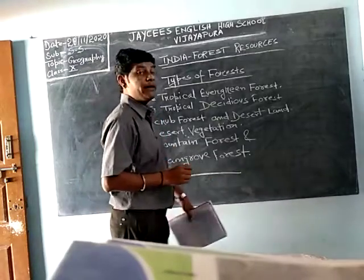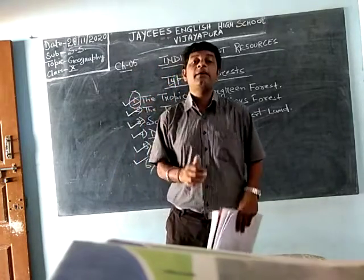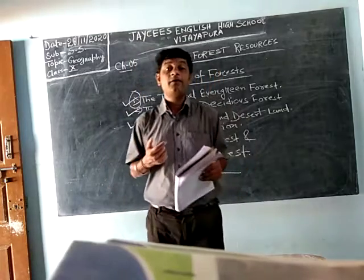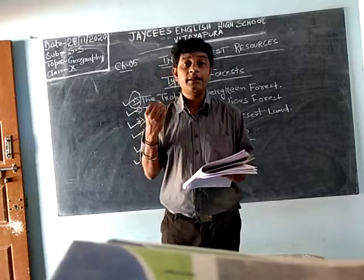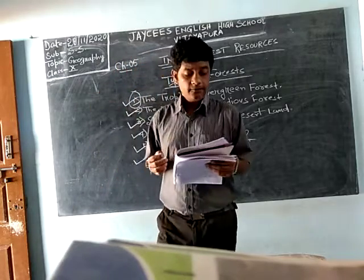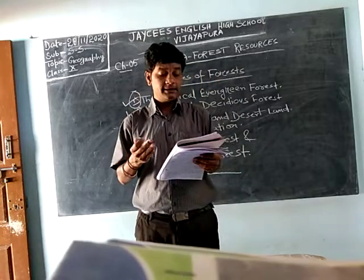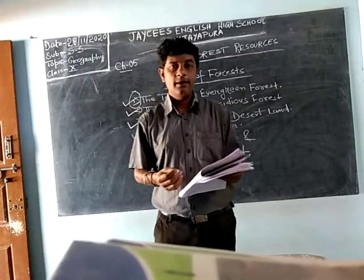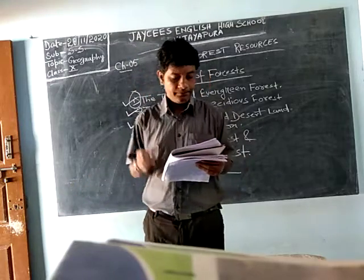The first type is the tropical evergreen forest. This forest is found in areas where rainfall is more than 250 cm annually. Due to heavy rain and high temperature, the trees are long in height and very dense — in some evergreen forests, sunlight doesn't even reach the ground.